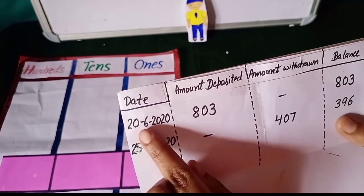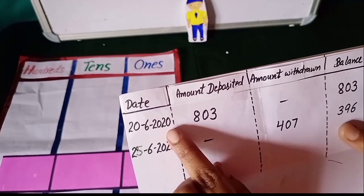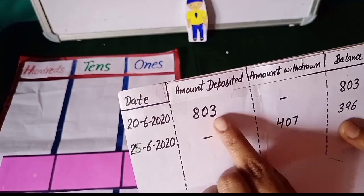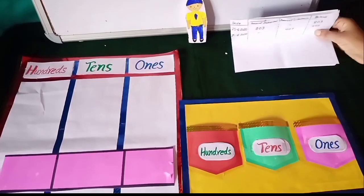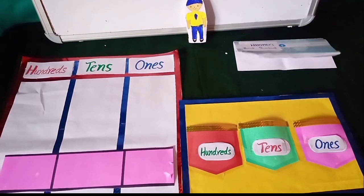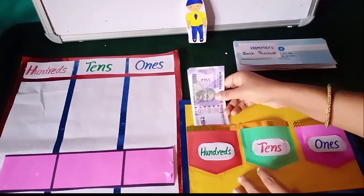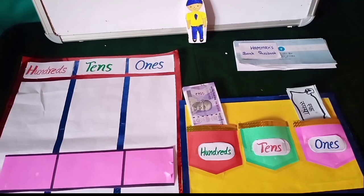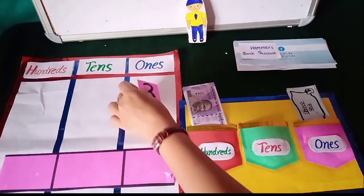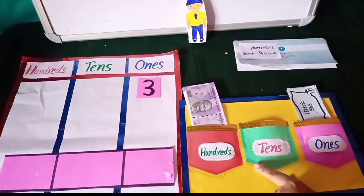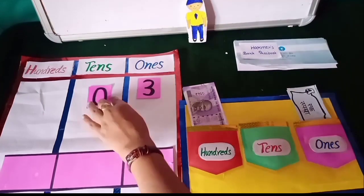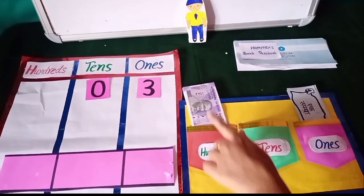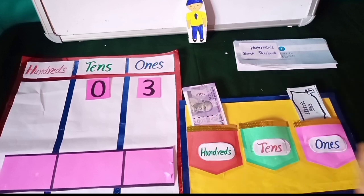On 20th June 2020, 803 rupees were deposited. There are 3 rupees in ones, so we put 3 in the ones place. No currency in tens, so we put 0 in the tens place. And 800 rupees in hundreds, so we put 8 in the hundreds place.